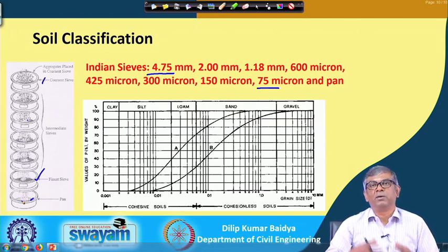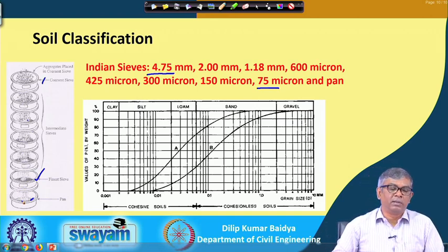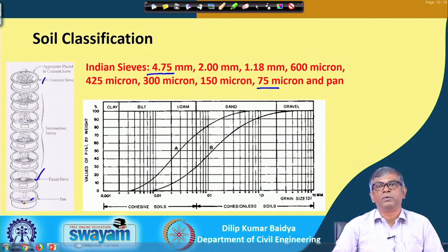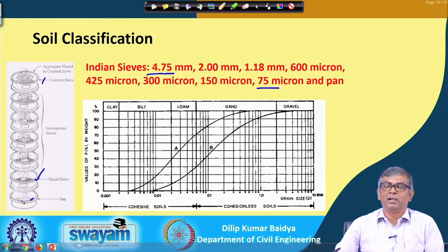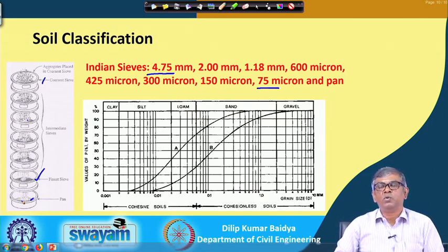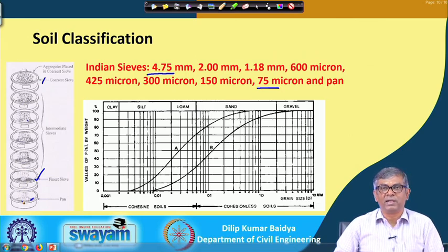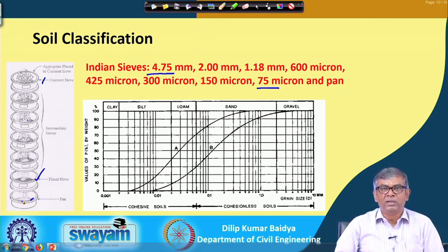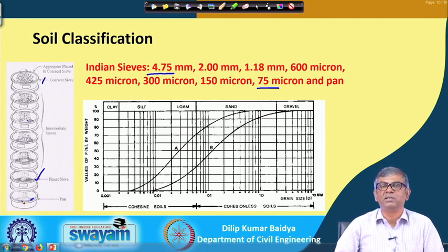Calculations are carried out after collecting the weight retained on each sieve. Suppose 500 grams of soil was taken; x1, x2, x3 grams retained on successive sieves, and xn grams on the pan — the summation of all should equal the original 500 grams. A small loss of less than 1 gram is acceptable due to sieving, but a loss of 10 grams from 500 is not acceptable and indicates the test was not conducted carefully.